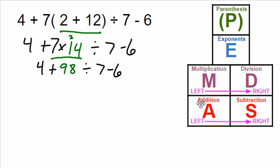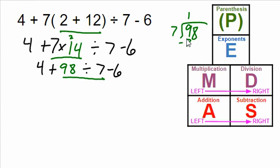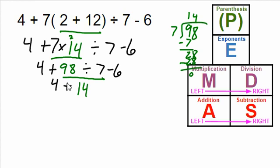So now we're done with that operation. We have one division problem left. So we're going to underline 98 divided by 7. We might have to do that one to the side: 7 goes into 9 one time, subtract 7, leaving 28. 28 divided by 7 is 4, leaving 0 remaining — so it's just 14. So we rewrite everything else: we're left with 4 plus 14 minus 6.